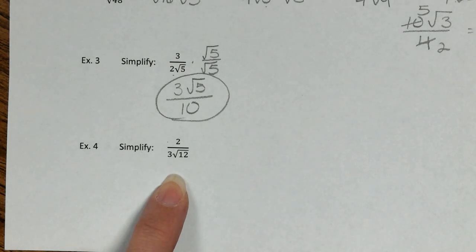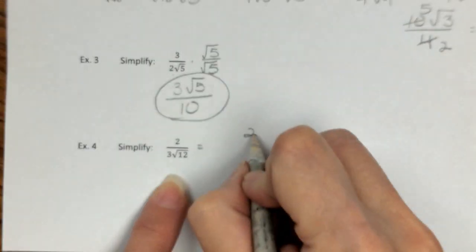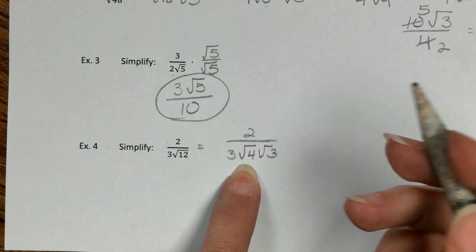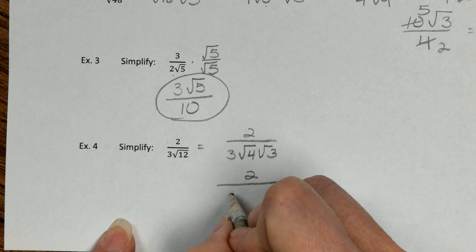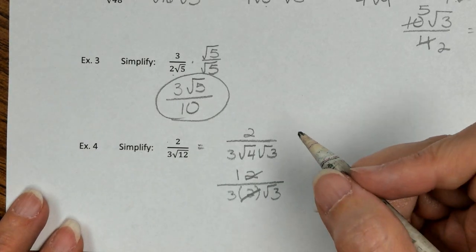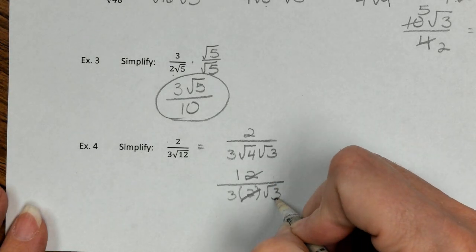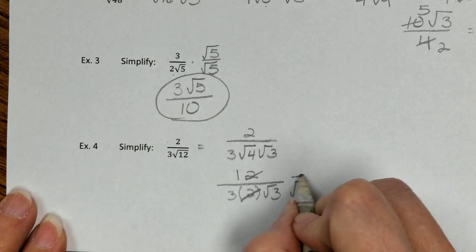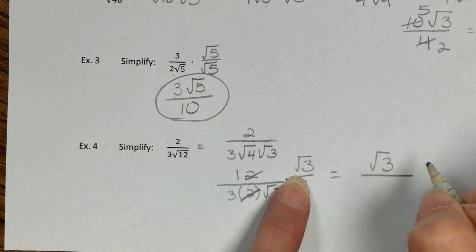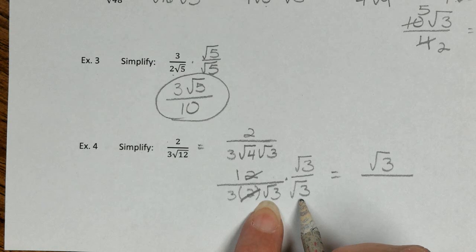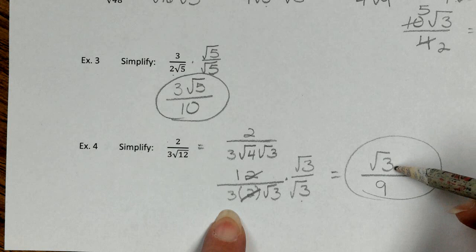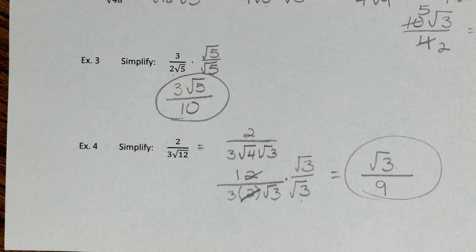One more: I see square root of 12 in this one, and that has a perfect square factor. I'm going to rewrite this to simplify that first. 12 is 4 times 3, and we can simplify the square root of 4. So here we have 2 over 3 times 2 root 3, and I'm going to reduce that. Now we have 1 over 3 root 3. But we must not leave the root 3 in the denominator, so we multiply top and bottom by the square root of 3. 1 times root 3 is just root 3, and in the denominator, root 3 times root 3 is 3, times the other 3 gives us 9. So the answer is root 3 over 9. It doesn't reduce, there's no perfect square factor of 3, and the radical is not in the denominator.